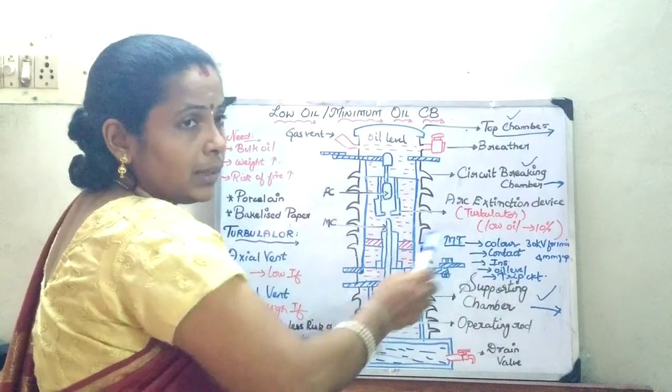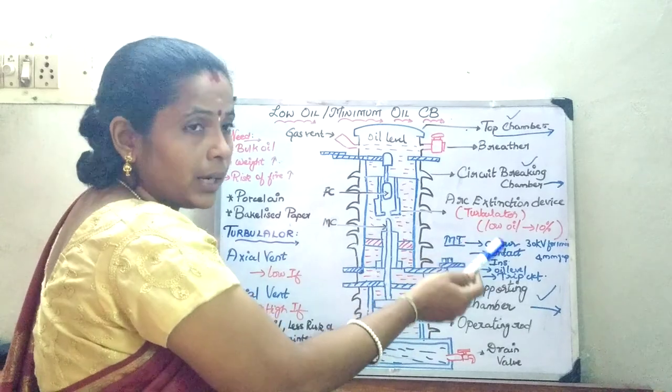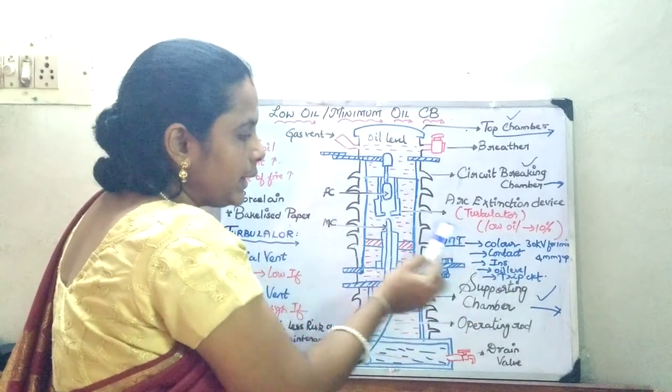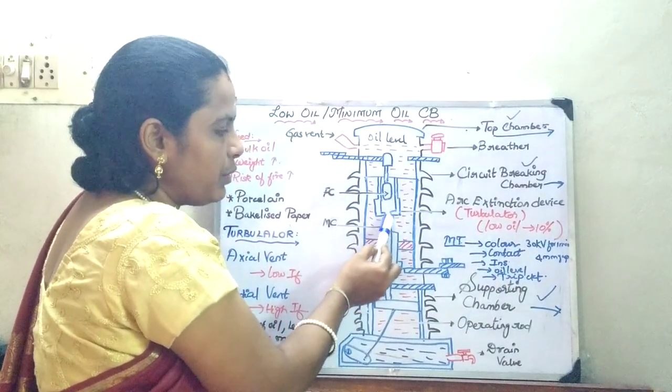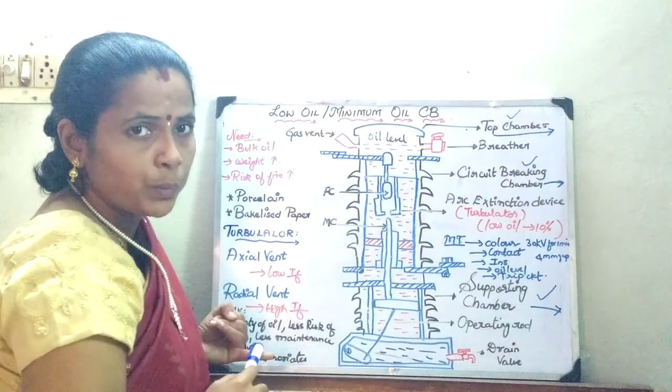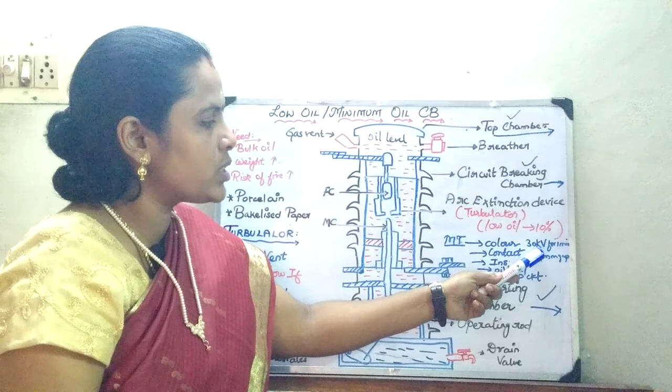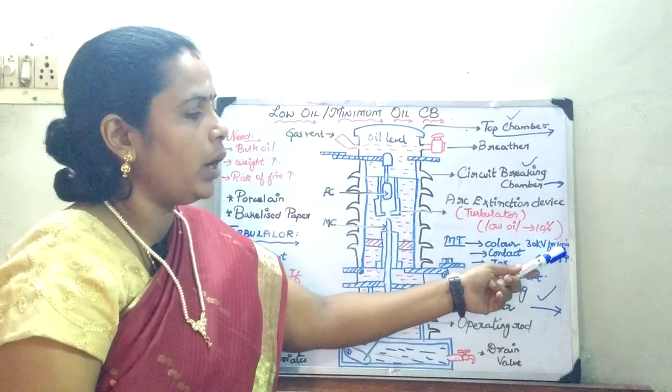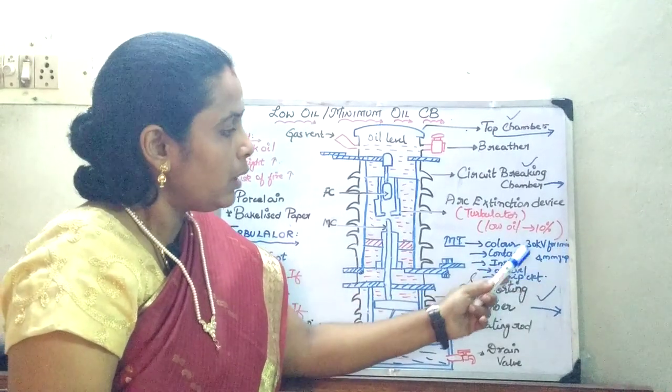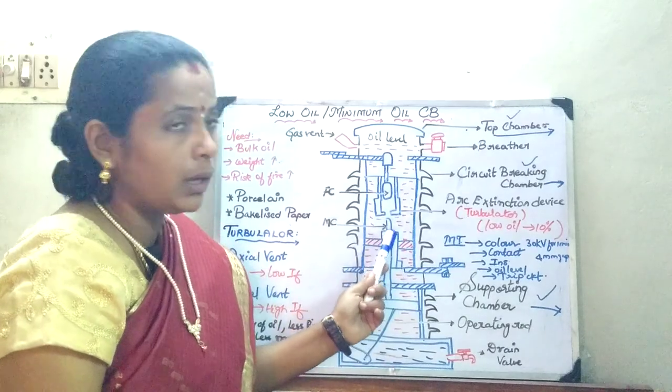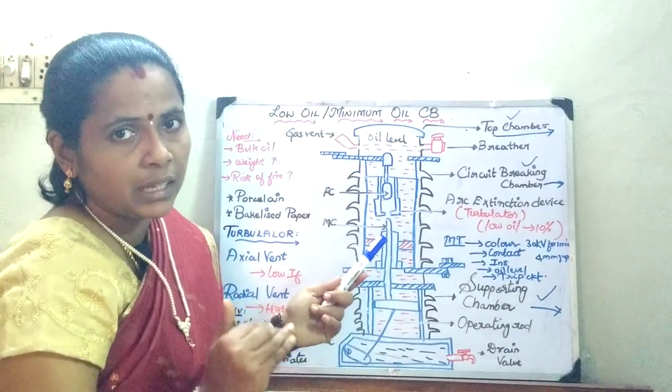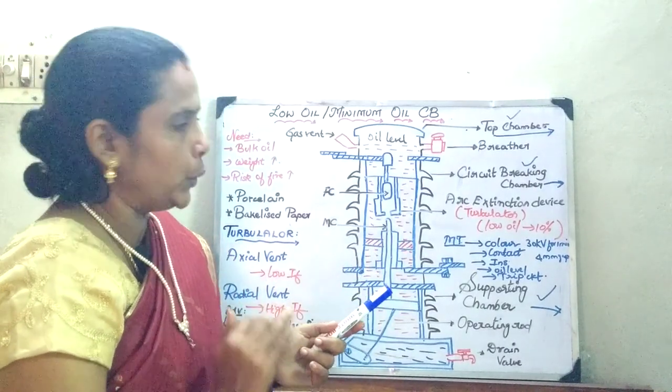With respect to its color, the color will change, the odor will change, and the contacts may burn. So the contacts should be checked regularly. And you should check whether the oil is able to withstand 30 kV for 1 minute for a 4 mm gap between the electrodes. If that is the case, the quality of the oil is good.